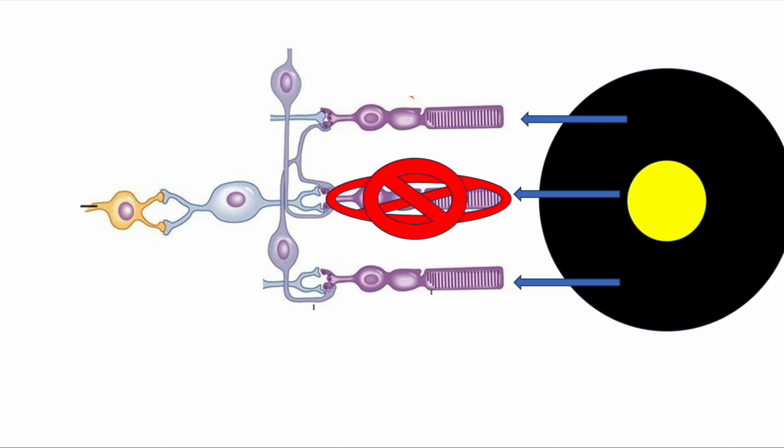Because the bipolar cell is on in this on-center, off-surround cell, this decreased or stopped firing from the center cell causes the on-bipolar cell to depolarize and pass this action potential onto the ganglion cell.